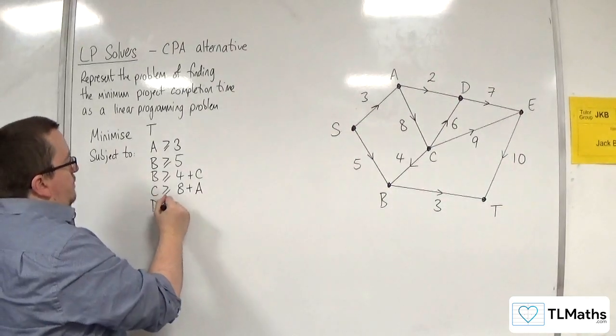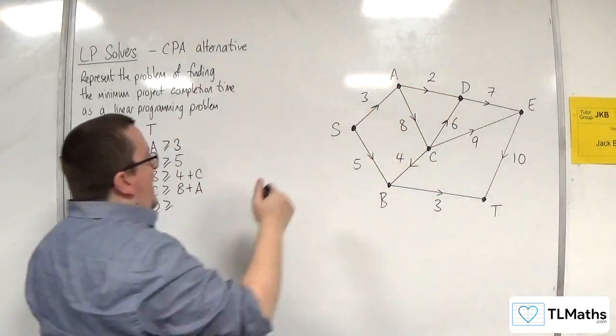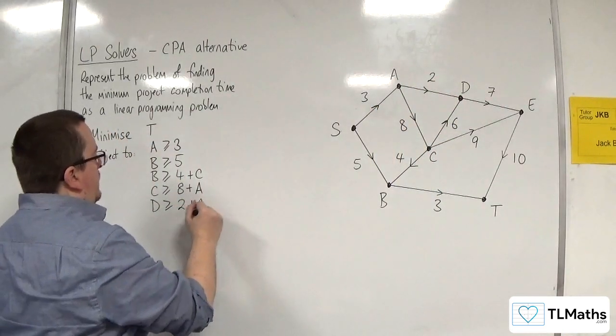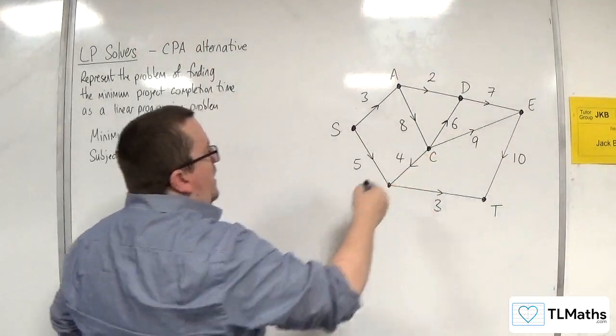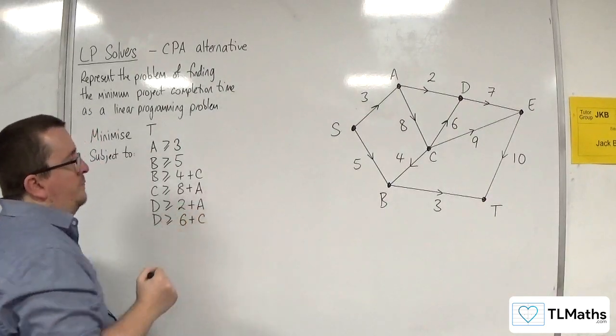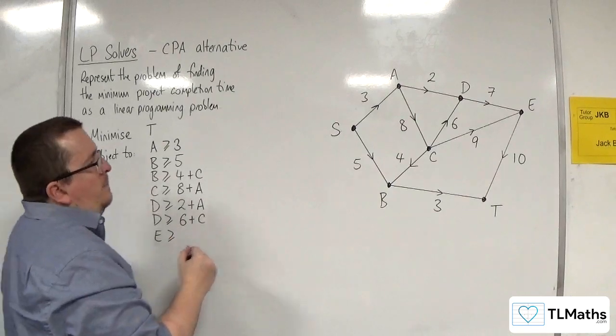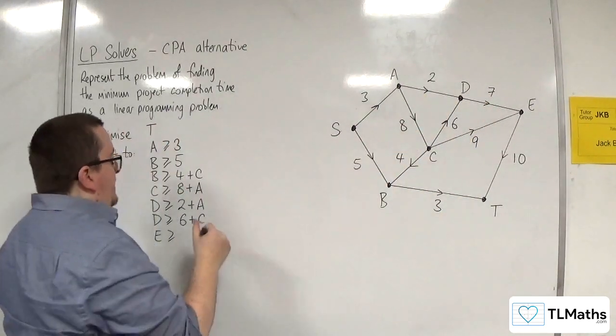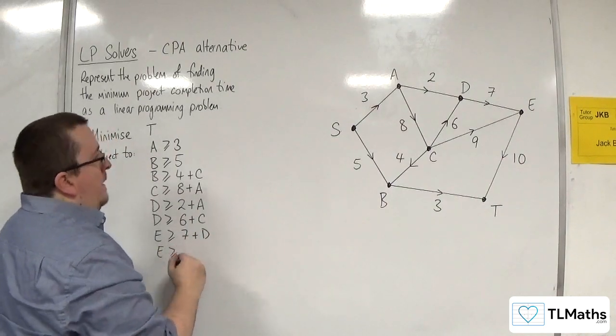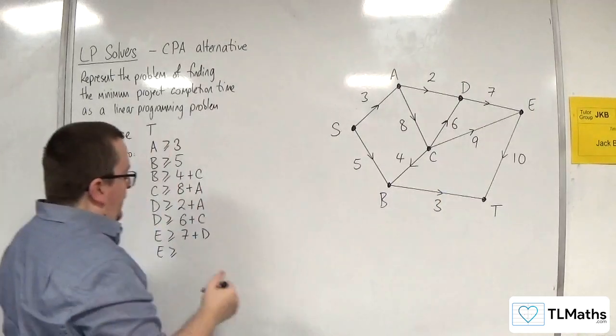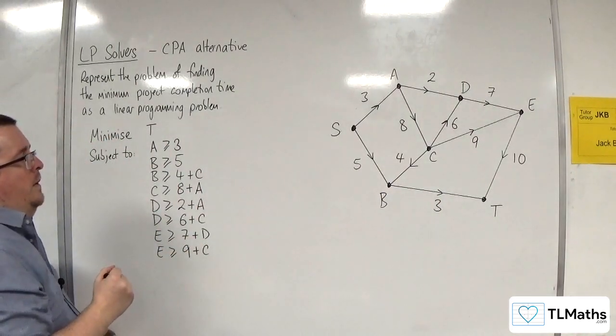Now for D. D must be at least 2 plus whatever is at A. And D must be at least 6 plus whatever is at C. Now for E, that must be at least 7 plus whatever is at D, and 9 plus whatever is at C.